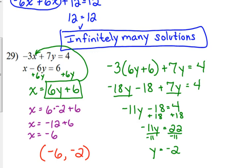So our solution is negative 6, negative 2. These are very easy to confirm. Plug it back into the other equation and make sure that negative 3 times negative 6 is positive 18, plus 7 times negative 2, that's negative 14, so 18 minus 14 is 4. It's an equation, you can always check it.